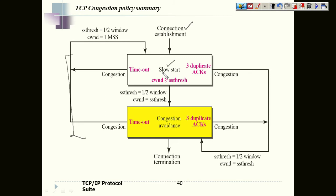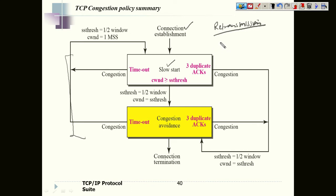To identify whether congestion is present in the network, there is no defined entity that will report it, but with the behavior of the connection we can realize that congestion is present. Congestion is identified whenever we are doing a retransmission. Retransmission is a mechanism through which we can identify that congestion exists in the network. Retransmission happens either because of RTO or because of three duplicate acknowledgements.